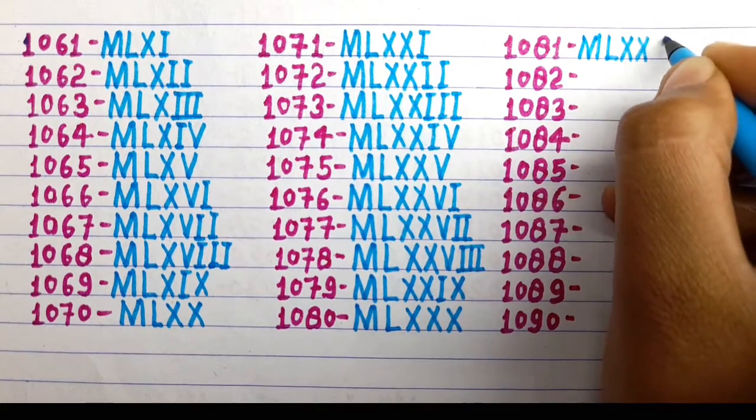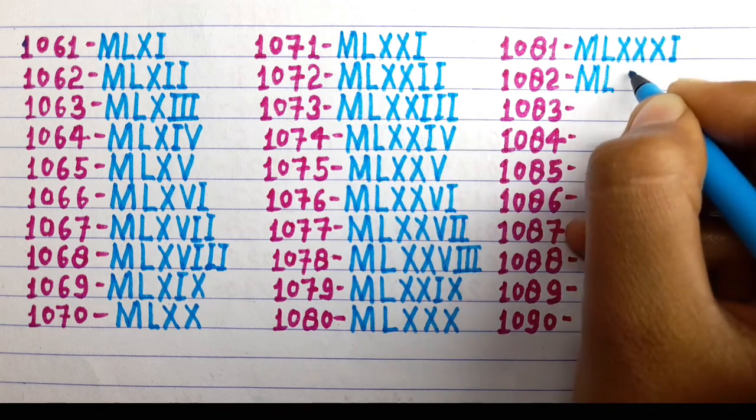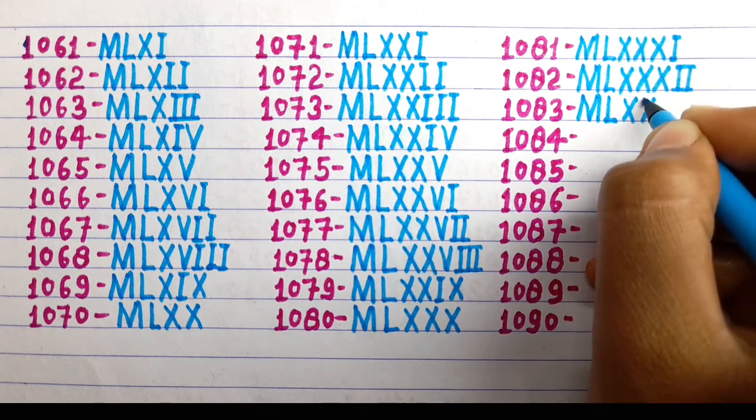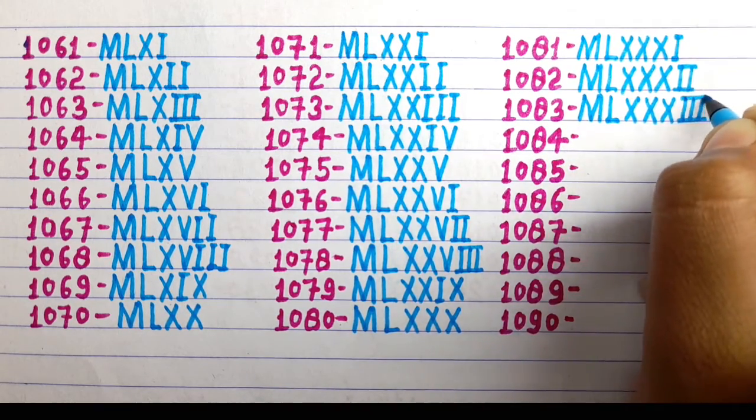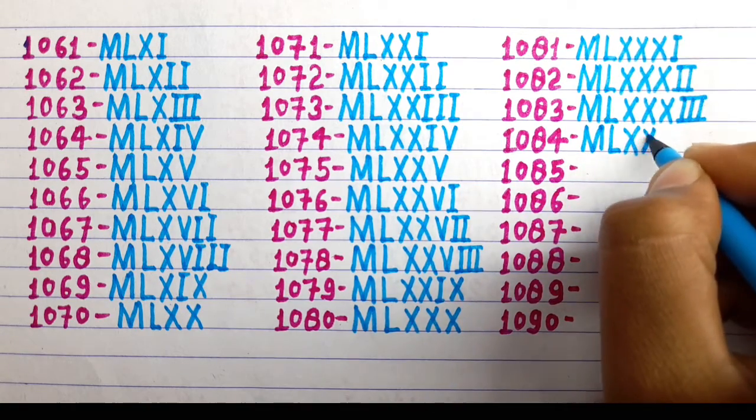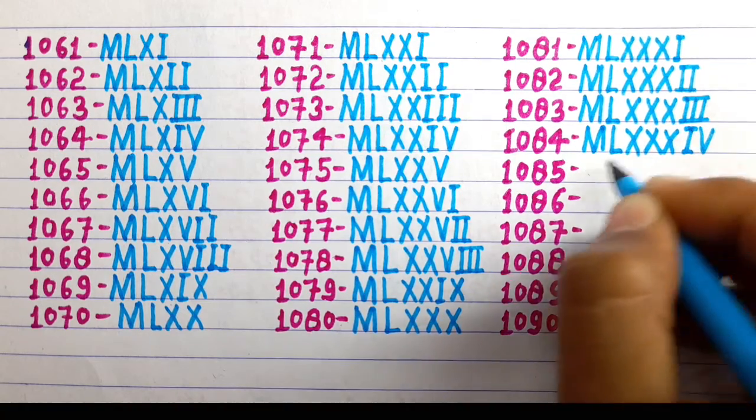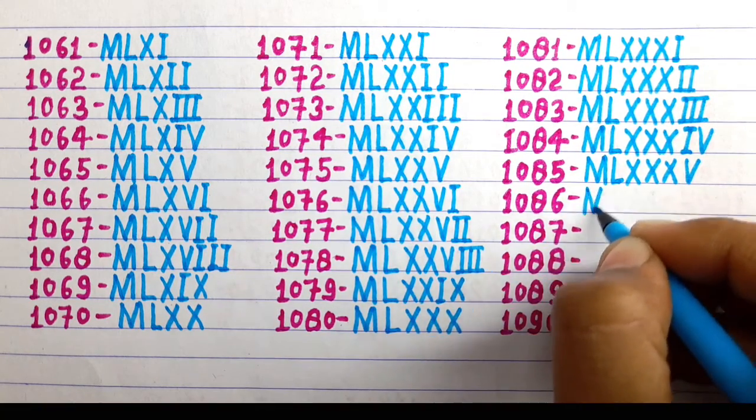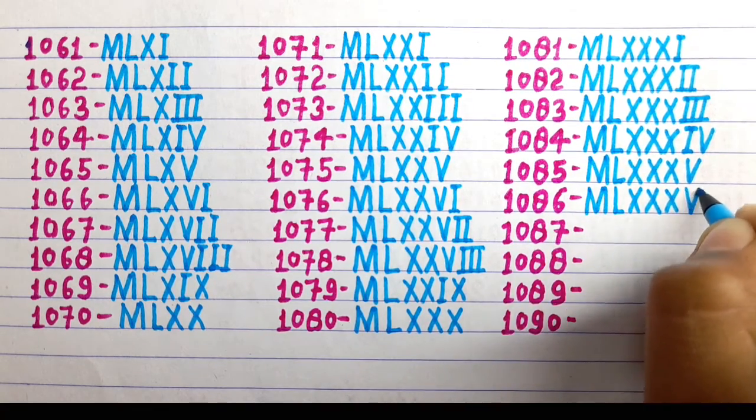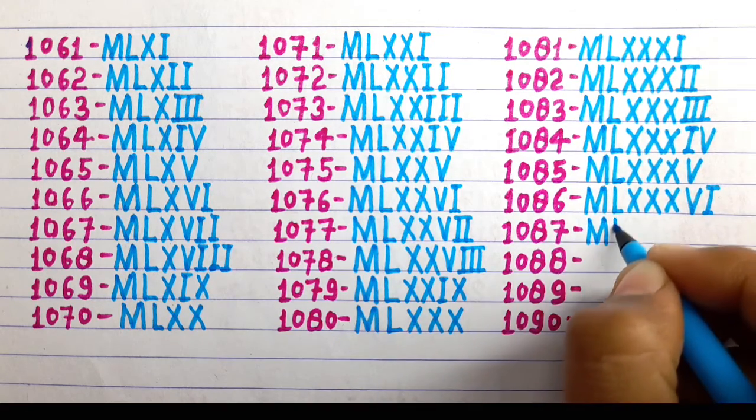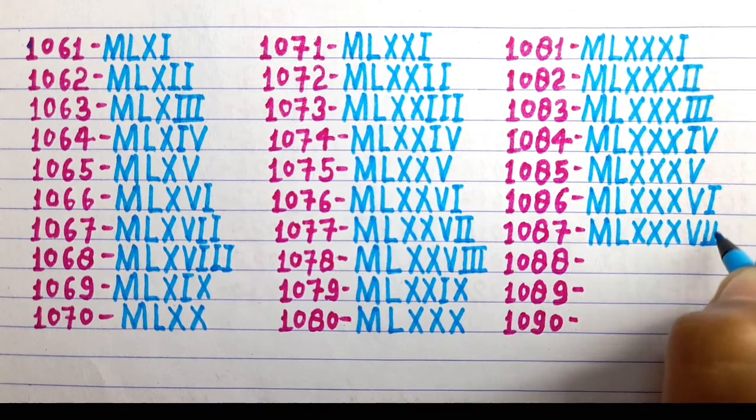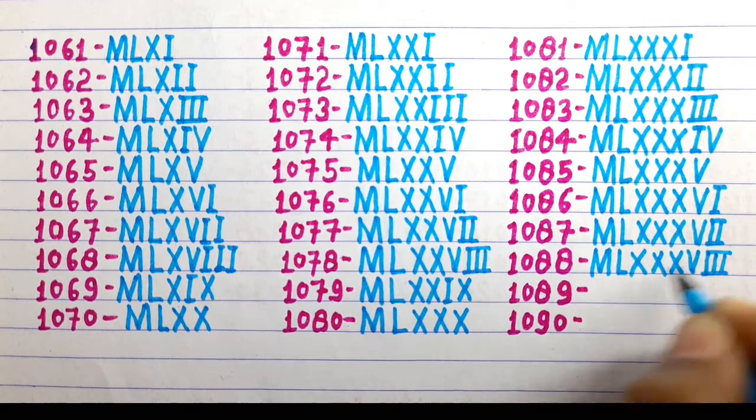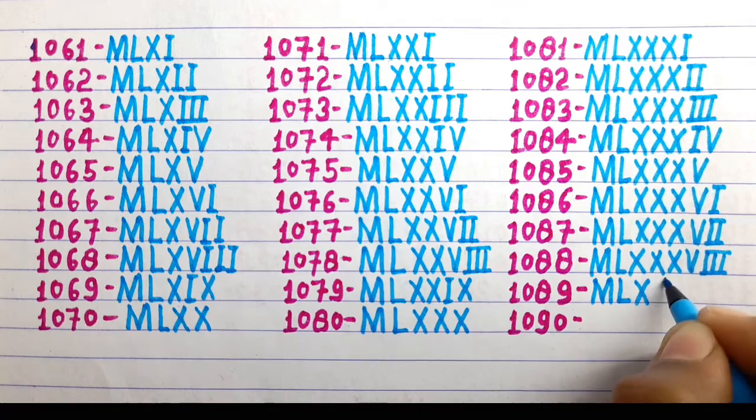1081 MLXXXI, 1082 MLXXXII, 1083 MLXXXIII, 1084 MLXXXIV, 1085 MLXXXV, 1086 MLXXXVI, 1087 MLXXXVII, 1088 MLXXXVIII, 1089 MLXXXIX.